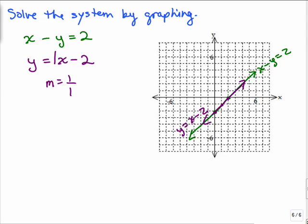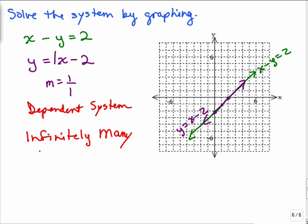Well, so they intersect everywhere. So this is called a dependent solution, a dependent system. And we say the answer is, there are infinitely many ordered pairs, infinitely many solutions or ordered pairs.